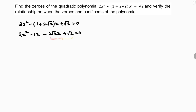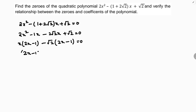Now in the first two terms I'll take x common, and in the next two terms I'll take √2 common. Taking x common gives x(2x minus 1), and taking √2 common gives √2(2x minus 1). Now taking (2x minus 1) common overall gives (2x minus 1)(x minus √2) equals 0.